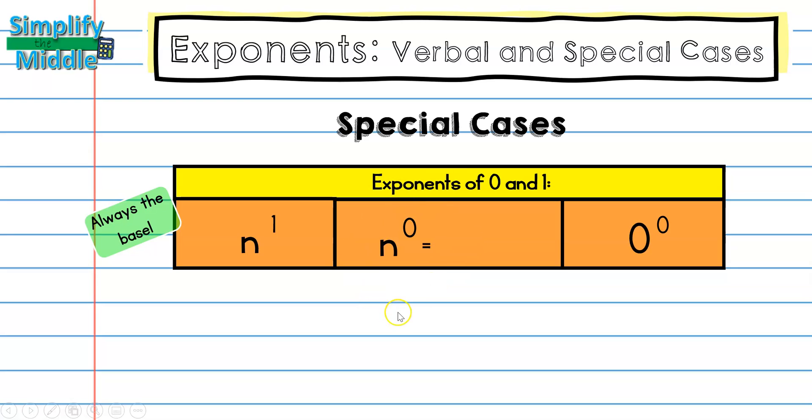Anything raised to the zero power is unique. This does not mean the base multiplied by another number. When it is n to the zero power, it means the base divided by itself. So this is really n divided by n. And because we know anything divided by itself will always be one, whenever you have an exponent of zero, you can assume that your answer is going to be one.